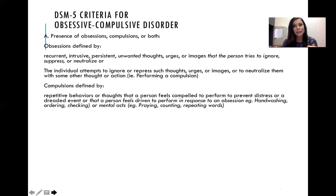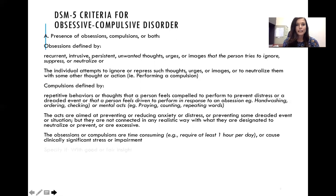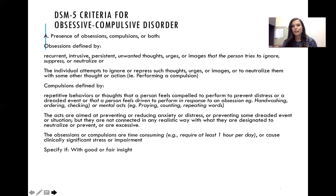They try to neutralize the anxiety, ignore it, or repress the thoughts and urges, and neutralize them with a thought or action by performing a compulsion. Compulsions are defined by repetitive behaviors or thoughts a person feels compelled to perform to prevent distress or a dreaded event. Examples include hand-washing, ordering, checking, or mental acts like praying, counting, or repeating words. These acts are aimed at preventing or reducing anxiety but are not connected in any realistic way with what they're designed to prevent, or they're excessive.